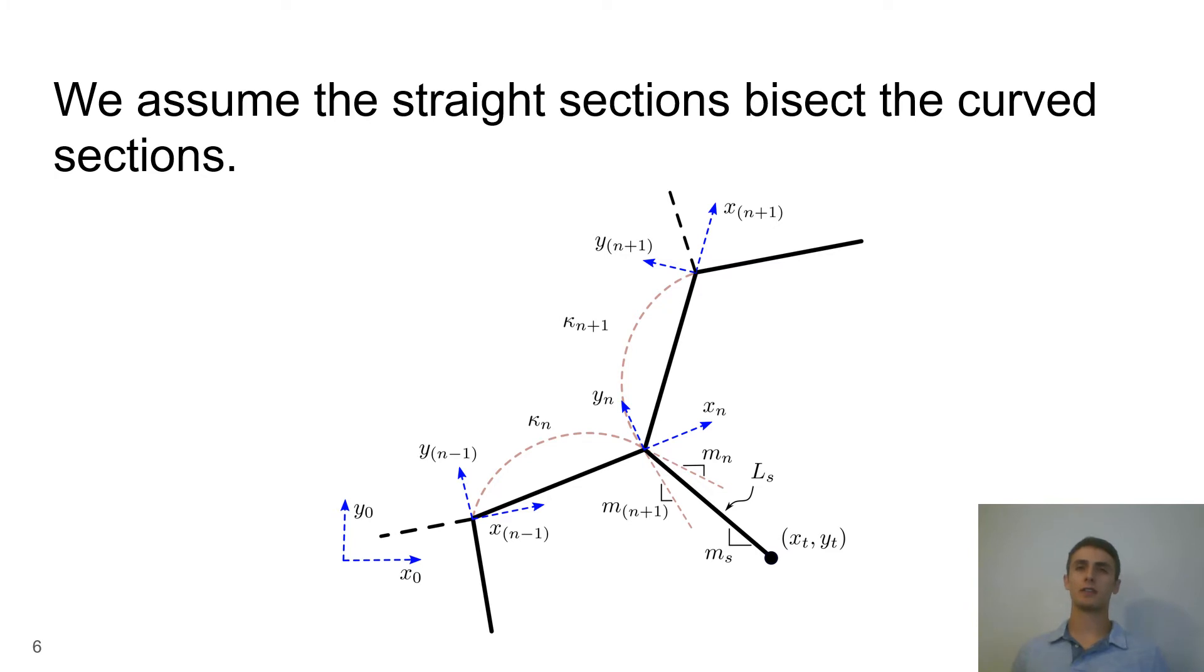We solve for the kinematics of the straight sections by finding the bisecting slope of two adjacent curves. Knowing this slope and the length of the straight section we are able to locate the outer tips of the robot.